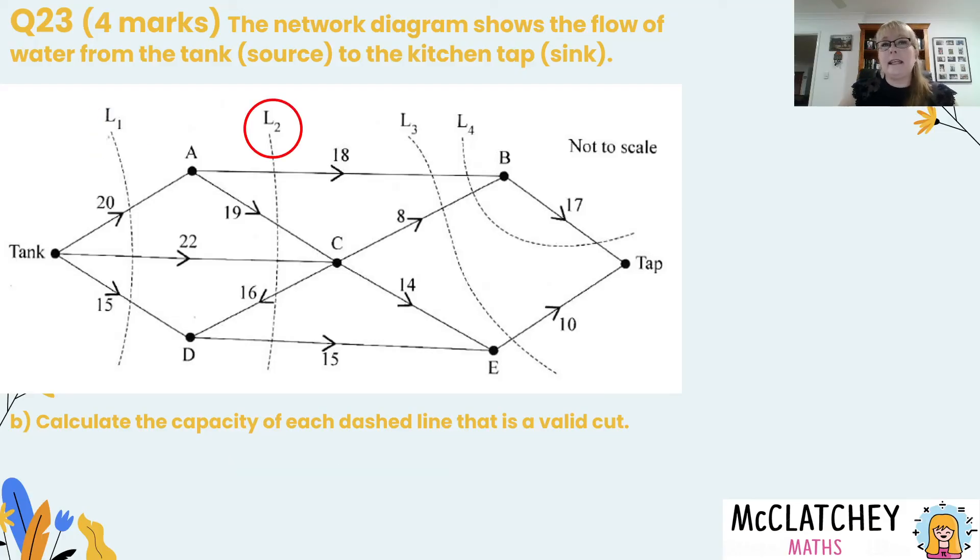Let's look now at cut L2. So once again we're going to count all of the lines that pass through moving from the direction of tank to tap. We've got an 18, we've got a 19, we've got a 22. We're not going to count the 16 because it's going backwards from tap to tank and we've also got this 15 here as well. So that will give us a total capacity of 74.